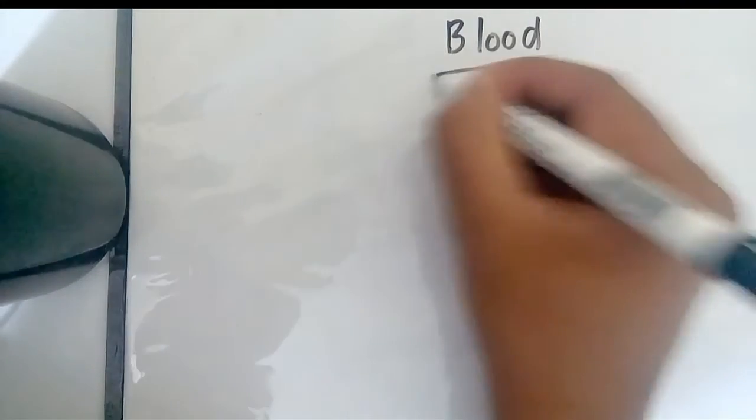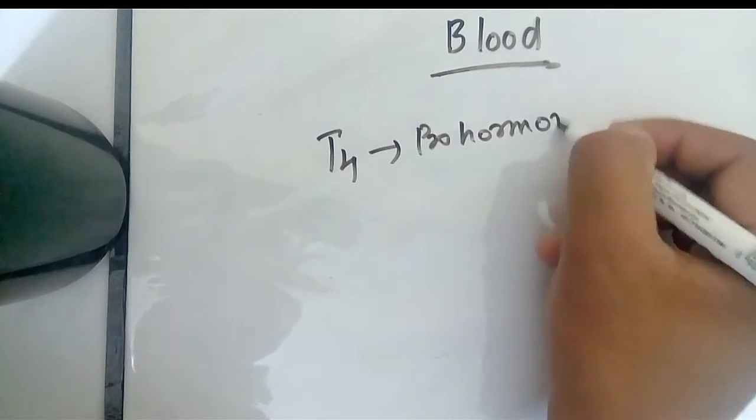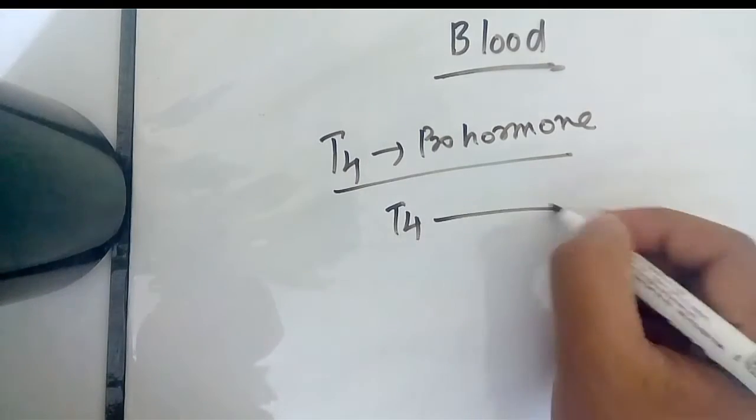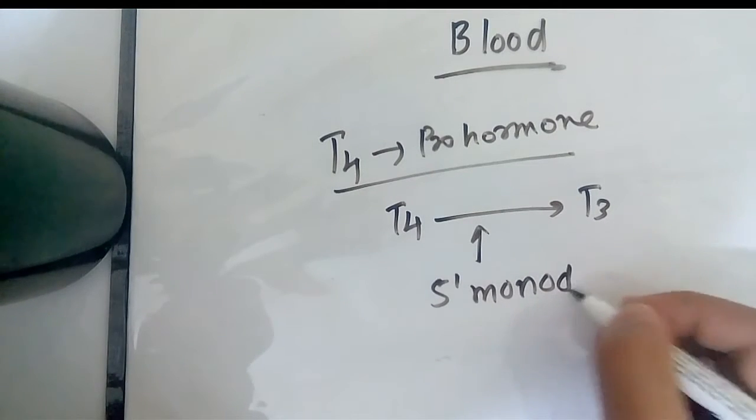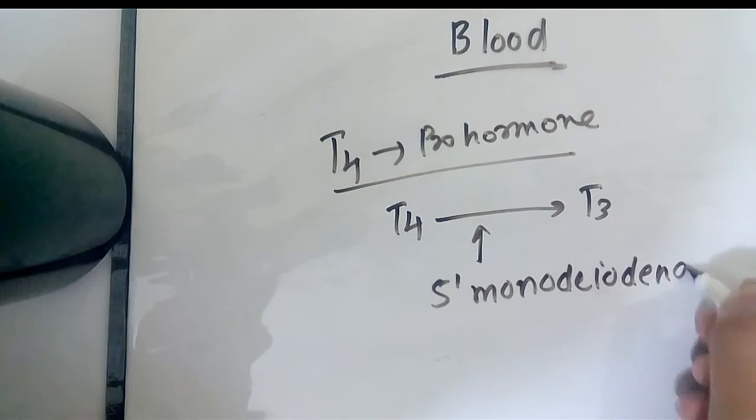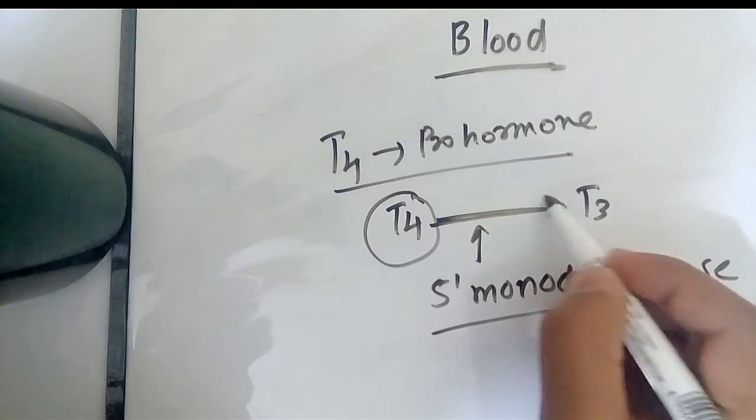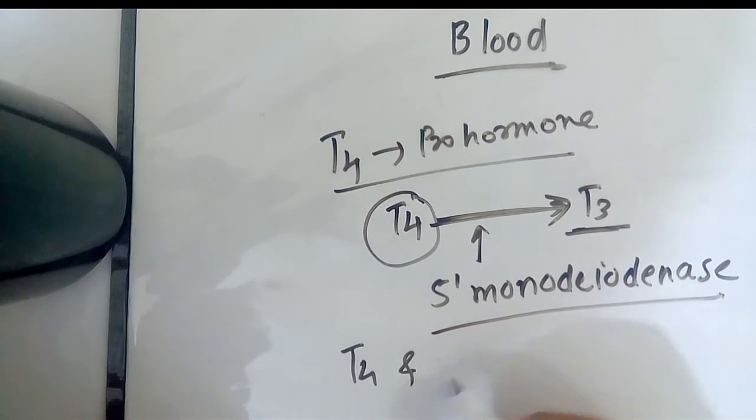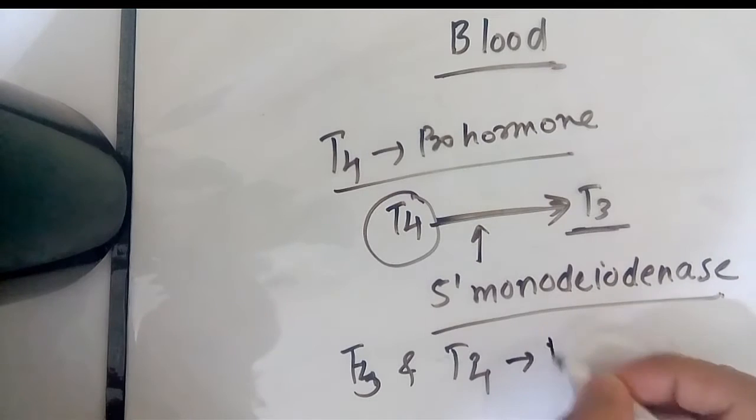Let's see what happens to T3 and T4 in blood. T4 is a prohormone, so some part of the T4 is converted to T3 by monodeiodinase. Some of the T3 and T4 bind to a protein known as thyroid binding proteins.